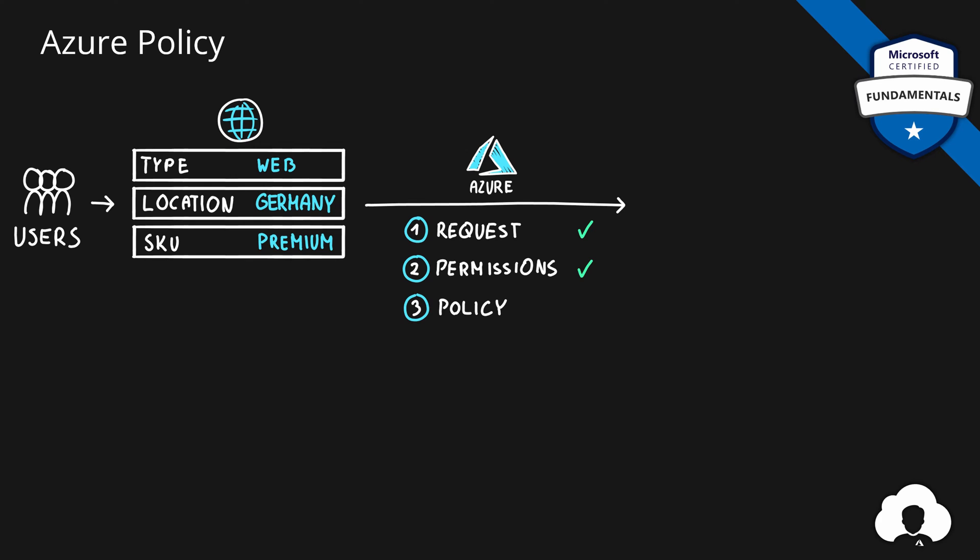So what is policy? Azure policy allows you to check for Azure resource properties and then make decisions based on the values of those properties. For example, let's say we have a company and our company has some data sovereignty requirements that need to be met in order to create applications. Let's say because of the security policy, our data might never be processed outside of the German borders. To do that, we need to ensure that all of our services created in Azure will be in location Germany.